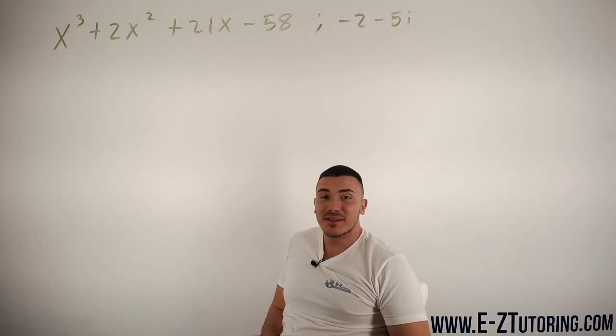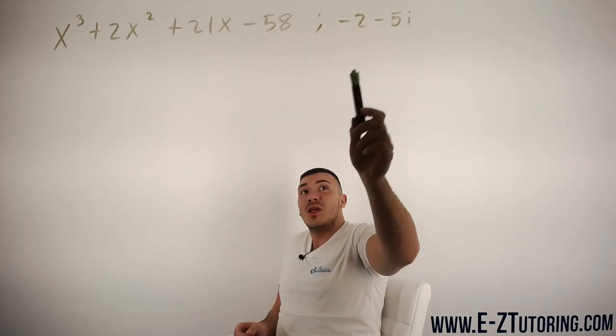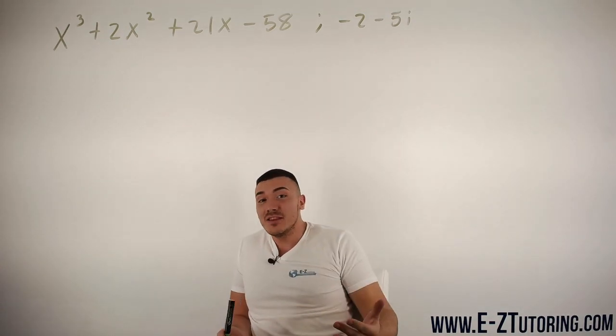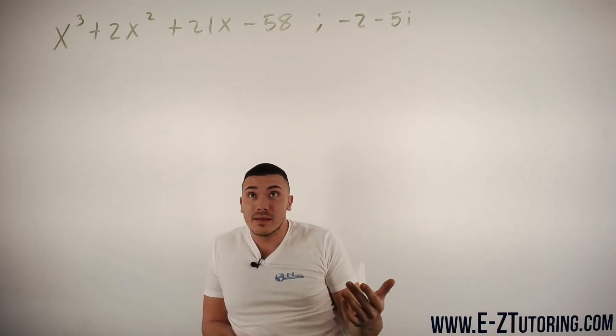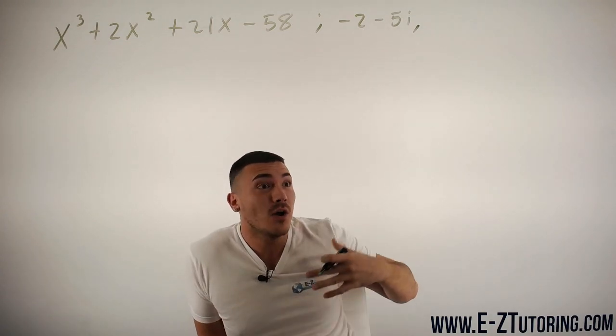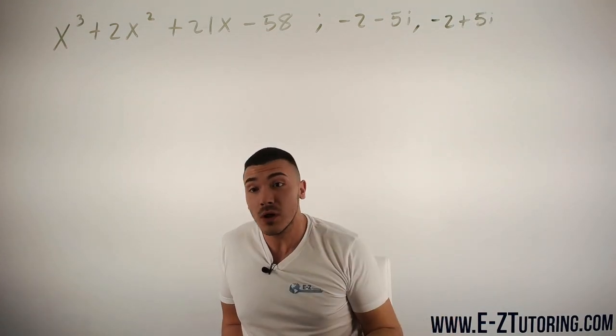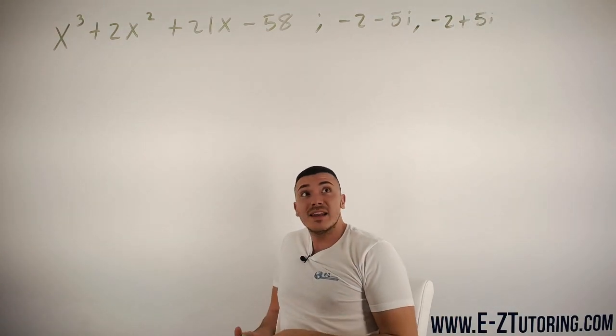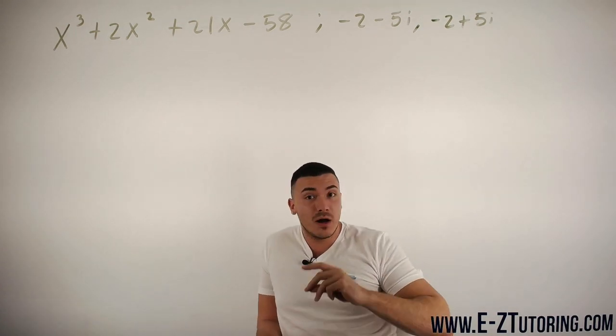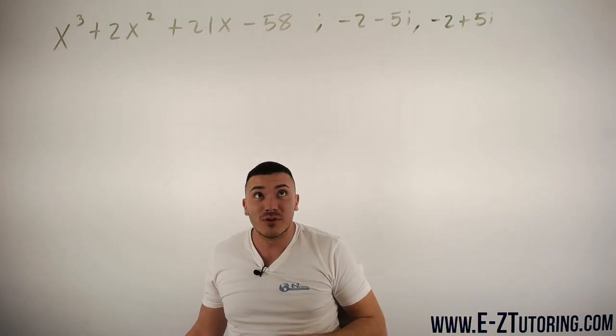And this is the complex zero that we're given. So here's a good rule of thumb: whenever you're given a complex root or a complex zero, its conjugate will always be a root as well. So if we're given -2-5i, we can automatically assume that -2+5i will also be a zero. For every polynomial, this rule always applies. Every time you see a complex root, always take the conjugate and say that's a root as well.